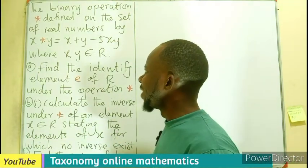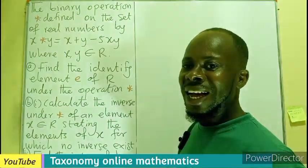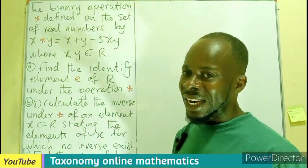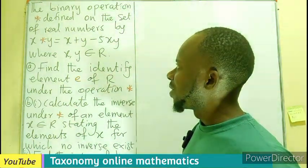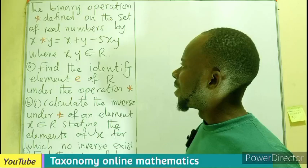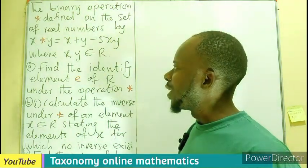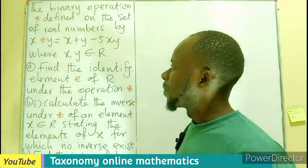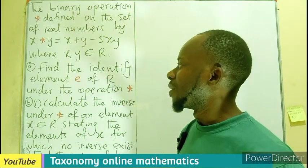Hello, welcome. Let's find the solution to this question under binary operation, identity element and inverse element. The binary operation star is defined on the set of all real numbers by x star y equals x plus y minus 5xy, where x and y belong to the set of real numbers.